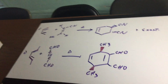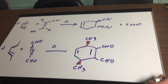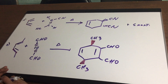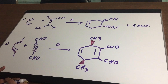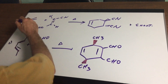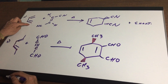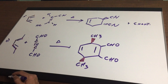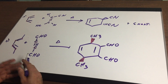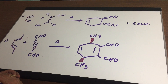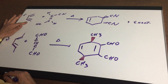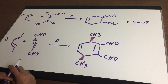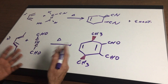In the Diels-Alder reaction we're going to form a six-membered ring. What we're going to do is have a dienophile and a conjugated diene reacting. This represents the conjugated diene and it's going to give four carbons. You're going to have a Diels-Alder reaction with other heteroatoms but for our purposes we're going to stick to carbons. The conjugated diene contributes four carbons and the dienophile contributes two carbons to the six-membered ring.